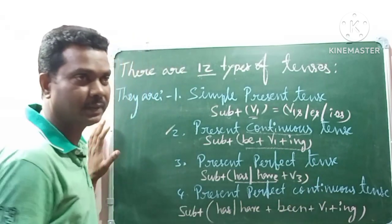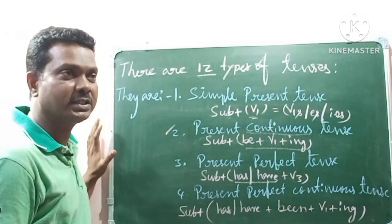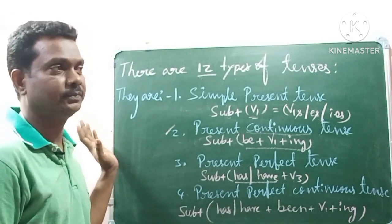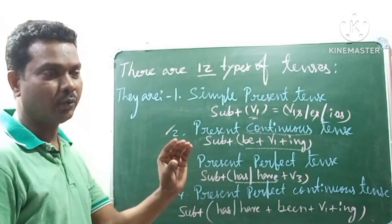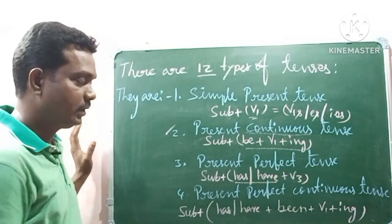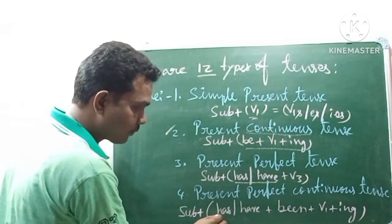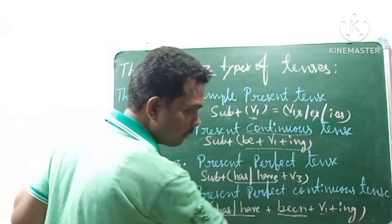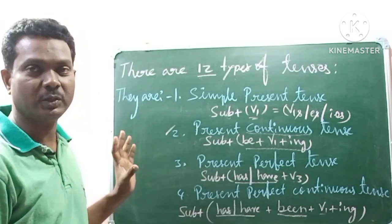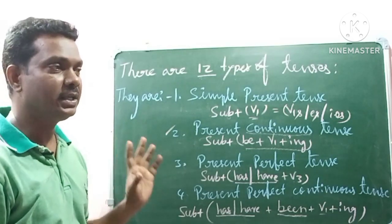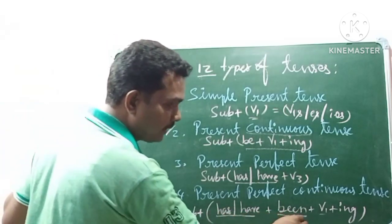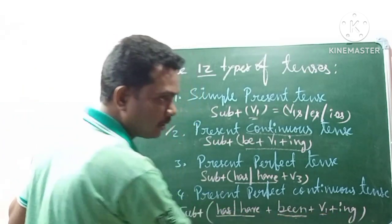Present perfect continuous tense: this tense is used when an action started in the past and is still continuing in the present. The structure is: have been plus V1+ing. For example: 'I have been living in Tirupati for 10 years.' That means the action started 10 years ago and is still going on.